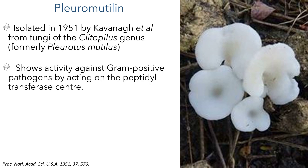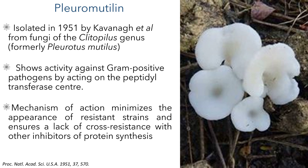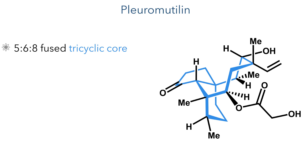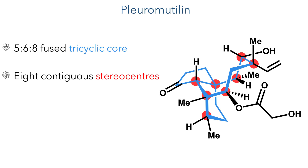This molecule shows potent activity against gram-positive bacteria and does this by acting on the peptidyl transferase centre. This is an uncommon mechanism of action, which minimises the appearance of resistant strains and ensures a lack of cross-resistance with other inhibitors of bacterial protein synthesis. Pleuromutalin is quite an interesting target as it possesses a distinctive 5-6-8 fused tricyclic core that contains 8 contiguous stereocenters, three of which are quaternary carbons — challenging targets for the synthetic chemist.